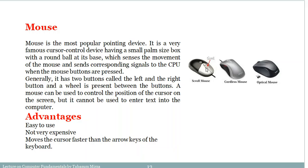The mouse has a left button, a scroll wheel, and a right button. We also have cordless mice which work in a similar manner. Optical mice don't have a ball at the base but offer similar functionality. Generally, a mouse has two buttons — left and right — with a wheel in between. A mouse can be used to control the position of the cursor on screen.